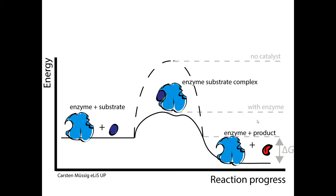Here's how it looks on a graph. With no catalyst, the activation energy needed to start the chemical reaction would be much higher. When you add the enzyme, notice the activation energy is much lower — that is exactly how an enzyme works. It lowers the activation energy needed to kickstart a chemical reaction, and then the enzyme and the product release from one another, and the enzyme goes on to kickstart more chemical reactions.